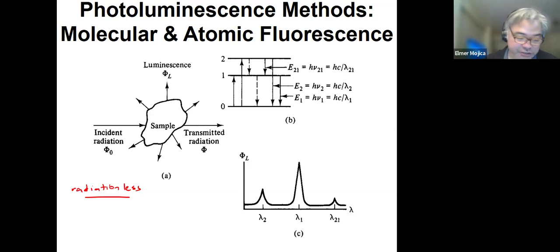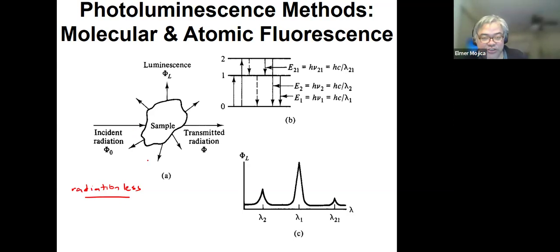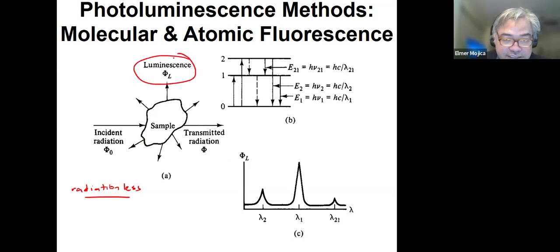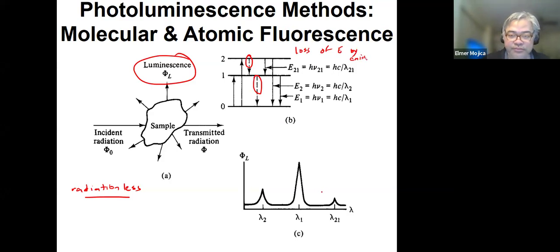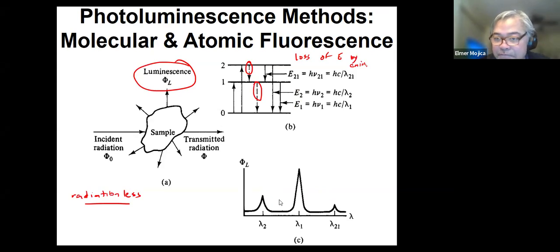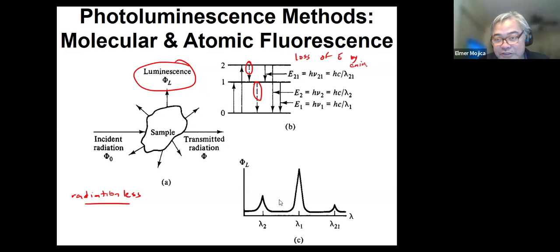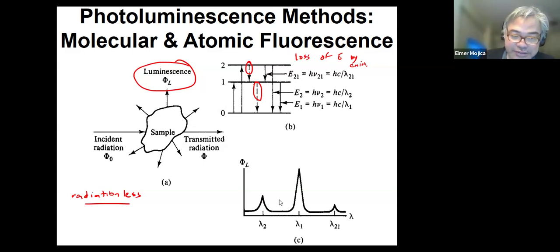Methods that utilize an external radiation source for excitation are called absorption methods, but what's measured is the radiation emitted by the sample — the luminescence. These radiation-less processes lead to emission of a photon. The emission is usually isotropic, and the frequency emitted corresponds to the energy differences between the levels.